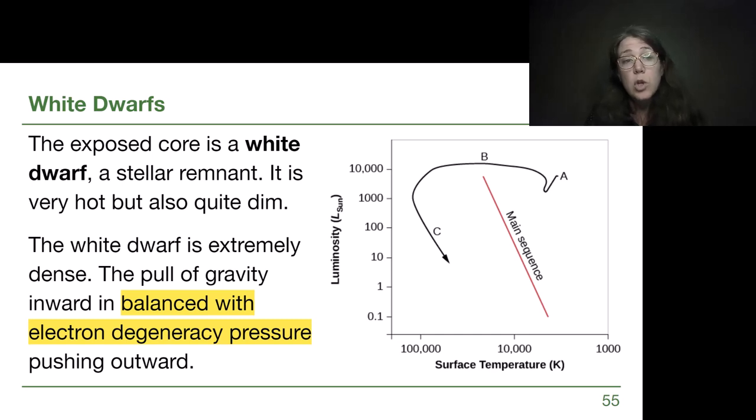So that exposed core is called a white dwarf. It is no longer a star, it is what's called a stellar remnant, the leftover dead core of what used to be a star. It is very hot, but it's also extremely dim, so it sits in the bottom left corner of our HR diagram. We have drawn that region before, we've even labeled it white dwarfs before, but we've never really had a sense of what those objects are. Now we do. They are the leftover exposed core of low mass stars. They are no longer pushing out because of fusion, there's no fusion happening.